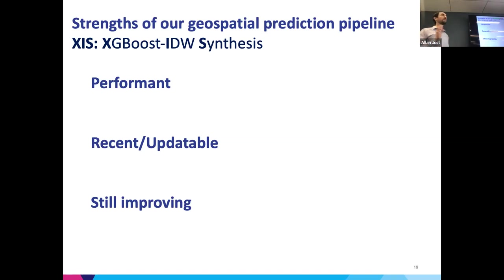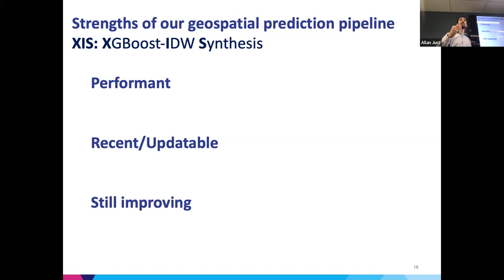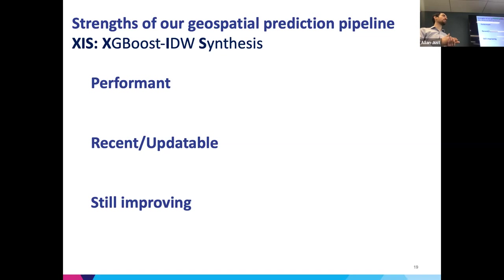These models are highly performant and I'll give examples of how they compare to other models. They're recent and updatable — so far through the end of 2021 but we're able to continue adding time. That's been a challenge for other models because many PM2.5 models rely on the EPA's National Emissions Inventory, where industrial actors have to report their emissions and those get pulled together into an inventory that's always released with a several-year lag. We're not using that information, which lets us bring our models up to date to be responsive to changing conditions.